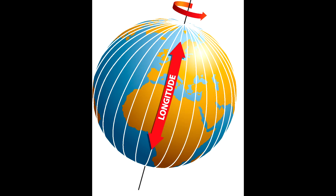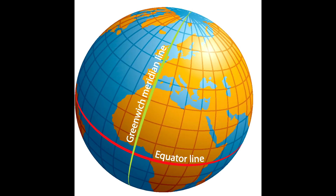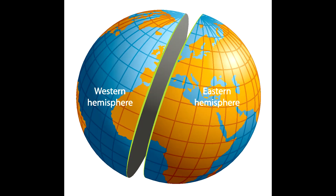Lines of longitude run from the top of the world to the bottom. They run from the north and south poles and are not parallel. The prime meridian, which is zero degrees in longitude, runs through Greenwich in London. It is used as the prime meridian on charts and maps and it divides the world into eastern and western hemispheres.